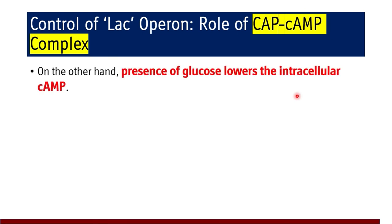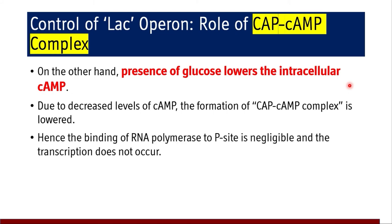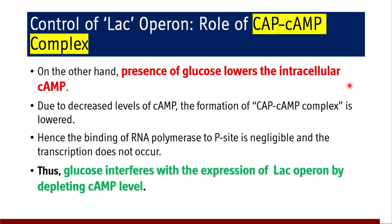On the other hand, the presence of glucose lowers intracellular cyclic AMP levels. Due to decreased cAMP, formation of the CAP–cAMP complex is reduced, binding of RNA polymerase to the promoter site is negligible, and transcription does not occur. Thus, glucose interferes with the expression of the lac operon by depleting cyclic AMP levels. When glucose is available, there is no need for enzymes that catabolize lactose — the cell has a mechanism to suppress synthesis of enzymes when their substrate is not required.